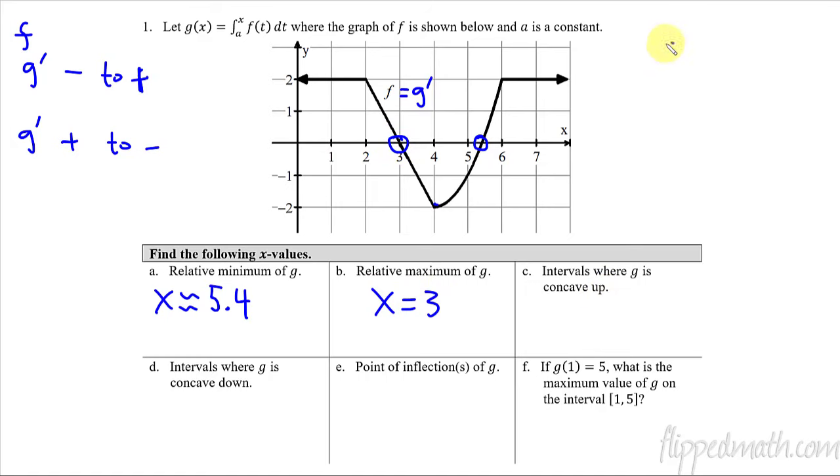Now concavity. So I'm looking for when is g double prime positive. Or that's the same thing as saying when is f prime positive. If f equals g prime, then f prime equals g double prime. That's how they relate. You just take one more step on the derivative. So I'm looking for when is the first derivative positive, or when is the slope of f positive.